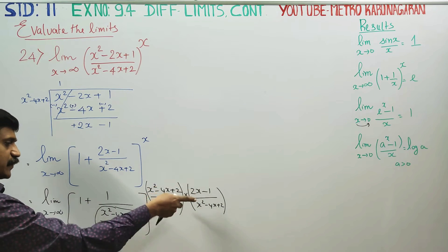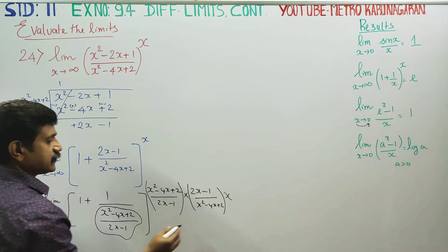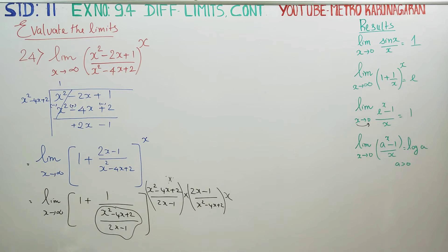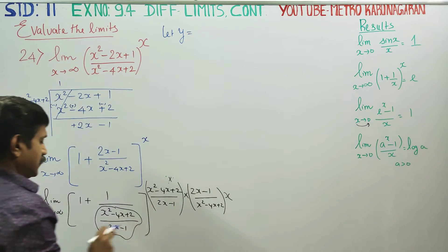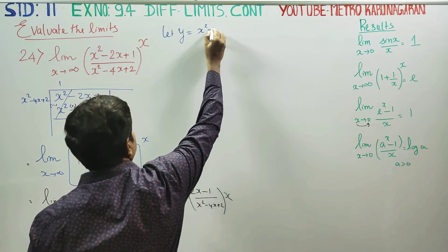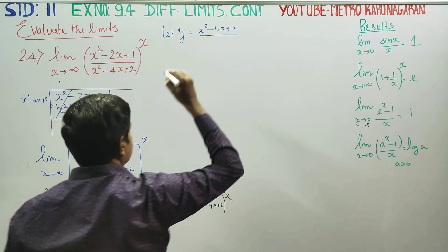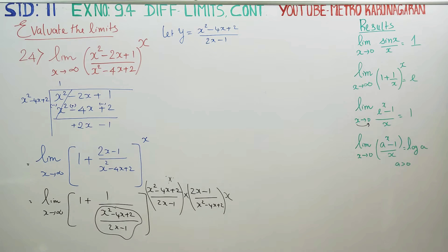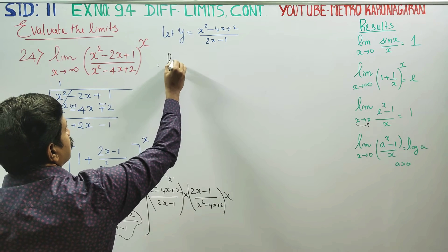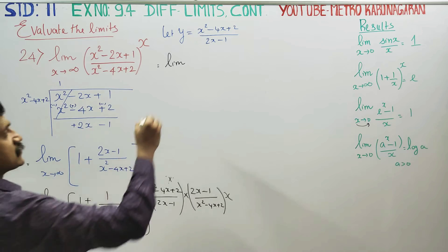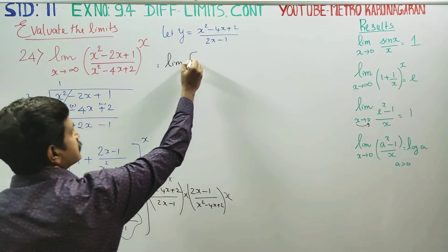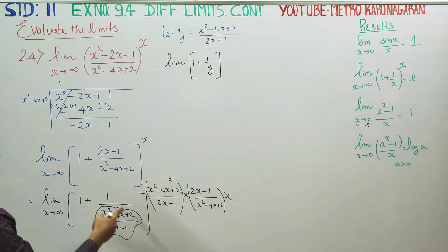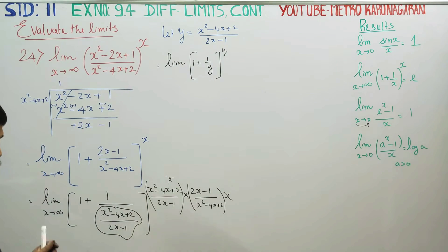Only the reciprocal here: 1 times x equals x. So x² - 4x + 2 divided by 2x - 1, into 2x - 1 divided by x² - 4x + 2.